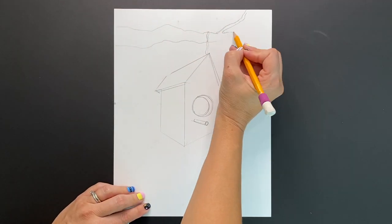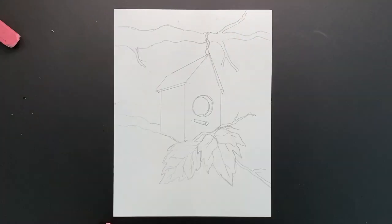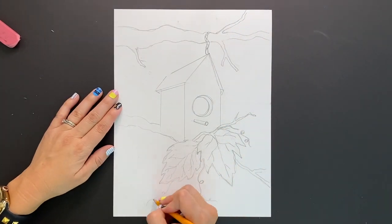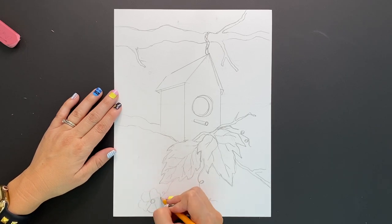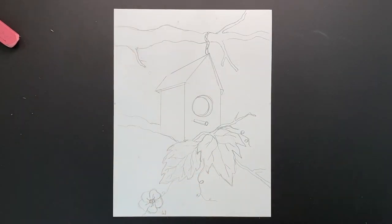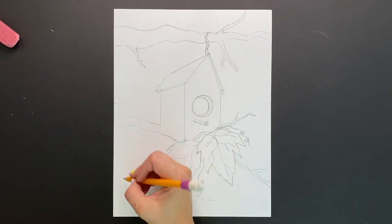Okay artists now that you've created your two-point perspective birdhouse it's time to show off your artistic abilities and create a unique setting. Now I'm going to draw mine as if it's hanging from a tree branch but feel free to draw any setting that interests you.